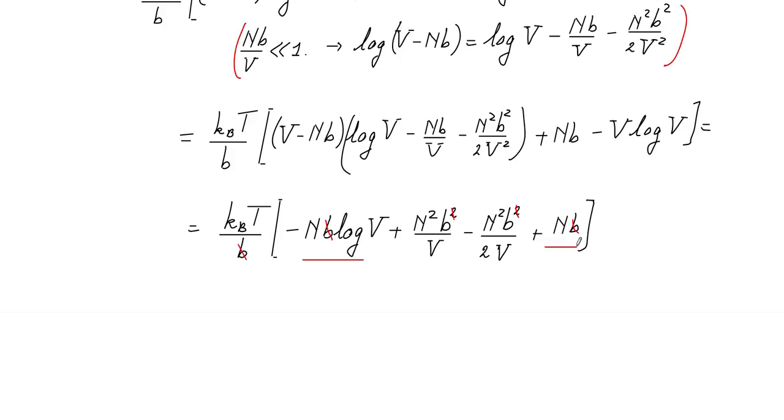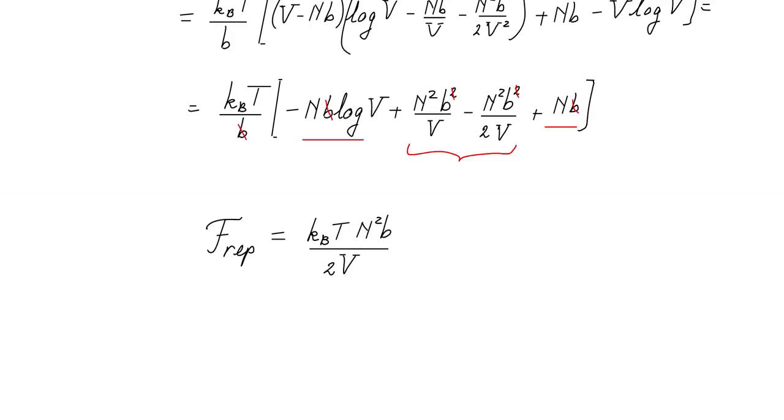Combining all the terms, we see that we can cancel the b which is in the denominator against the b in each of these terms. The first and the last term no longer depend on b. In fact, they are part of the partition function of an ideal gas. So they are not related to the repulsion, they are always there. The terms related to the repulsion are these two. In the end, we will use for the repulsive energy the following expression: f repulsion is kBT times n²b divided by 2v.